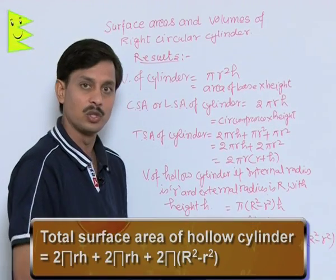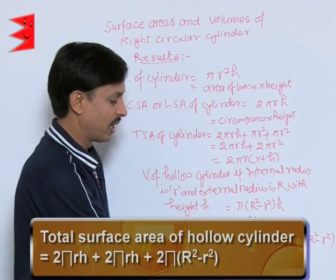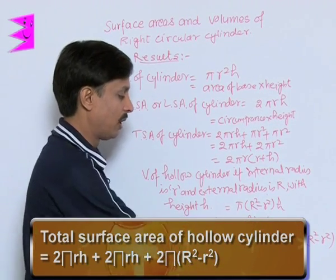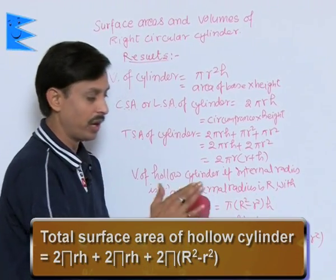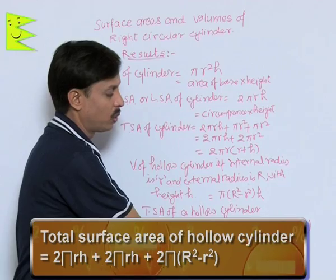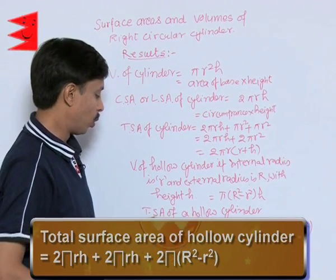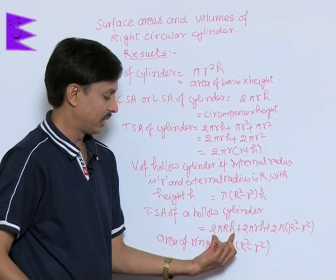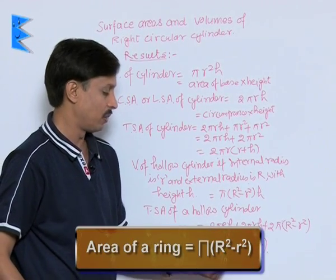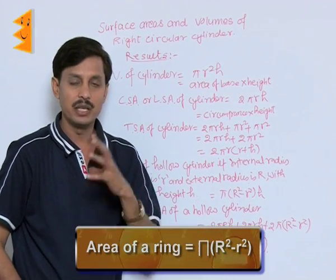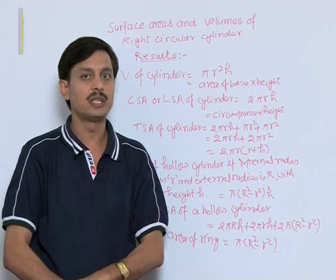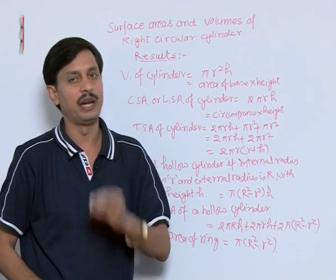The total surface area of a hollow cylinder equals the external surface area (2πRh) plus the internal surface area (2πrh) plus the area of the two rings at the ends. The area of one ring is π(R² − r²), so the area of two rings is 2π(R² − r²). We will use these results to solve problems related to the right circular cylinder for obtaining the volume and surface area.